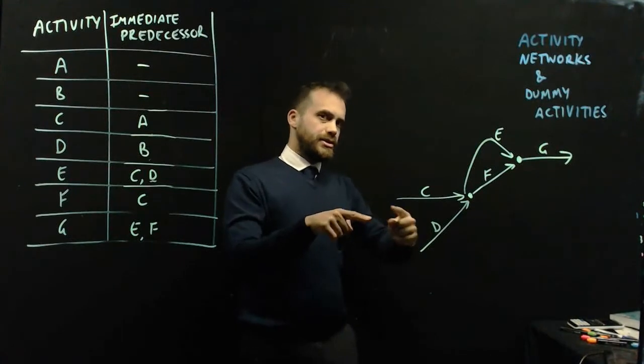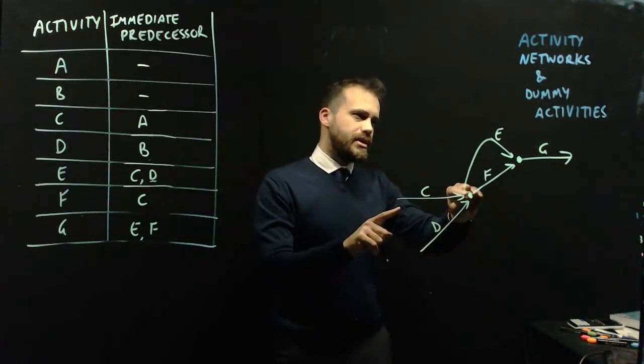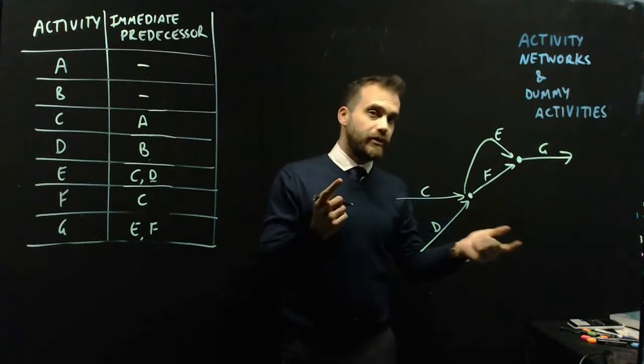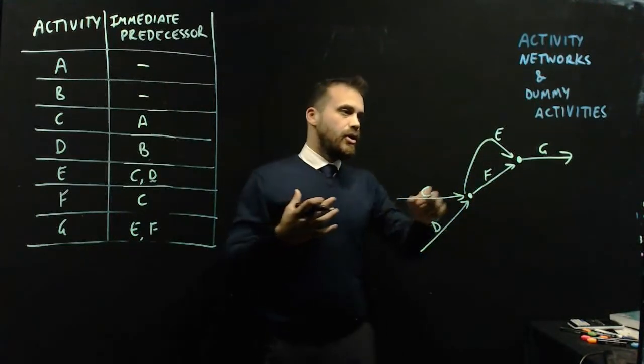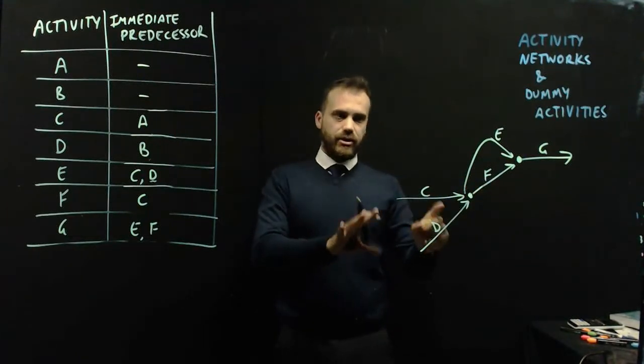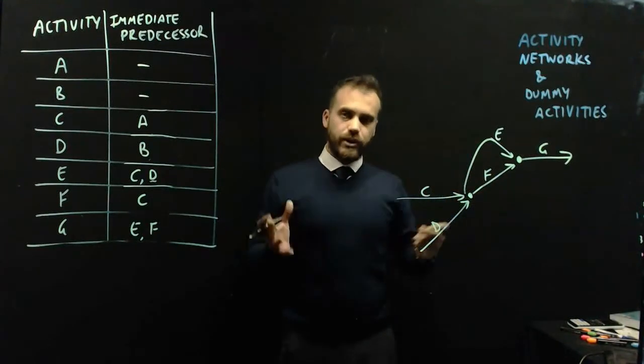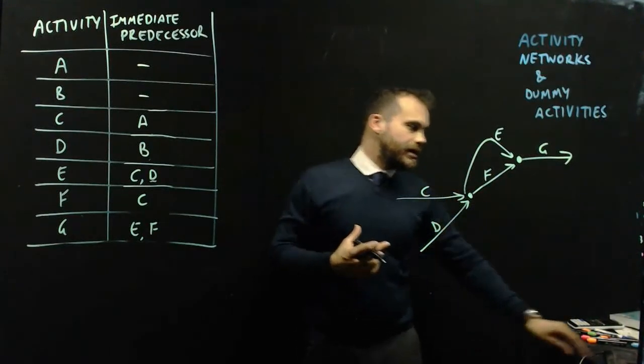Because this picture seems to suggest that D is the immediate predecessor of E and of F. And it's not the immediate predecessor of E and F. It's only the immediate predecessor of E. So what are we going to do? We're going to use something called a dummy activity.